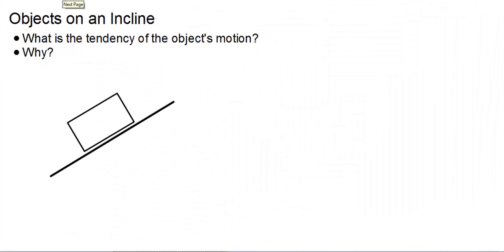So we have an object that's on an incline, the first thing we want to think about is what is the tendency of the object's motion? What is the object going to do? That of course is to slide down the incline.